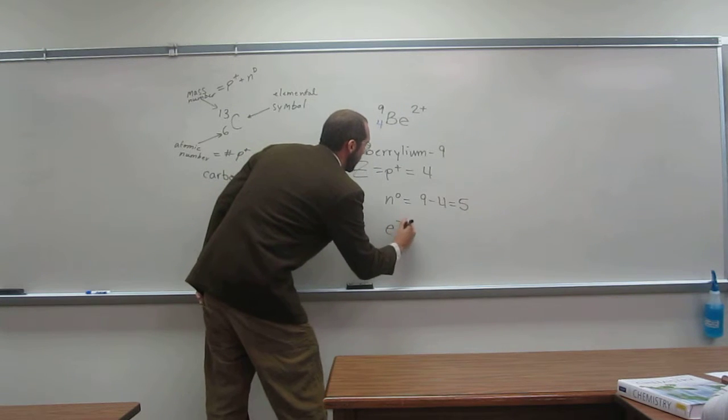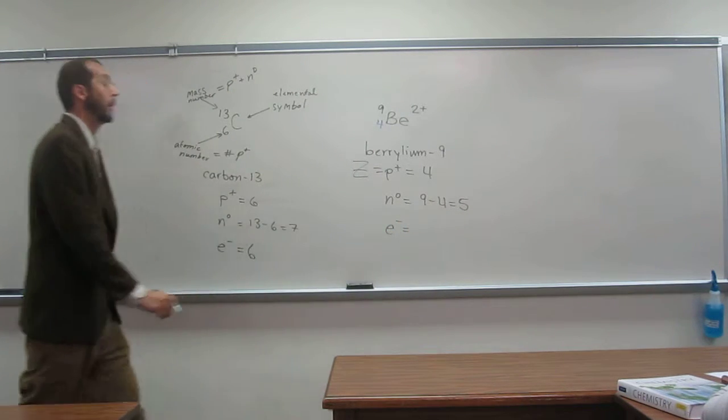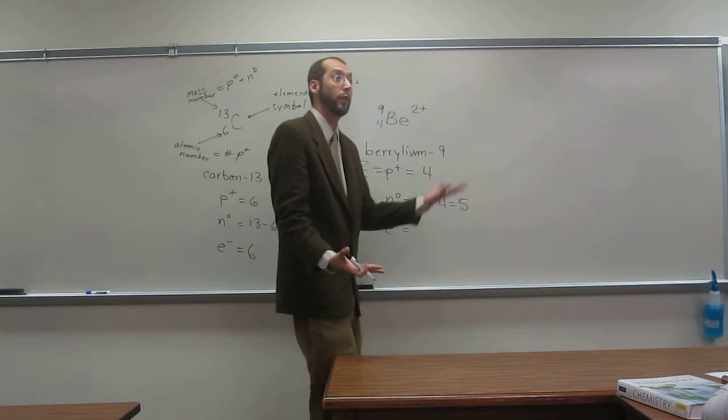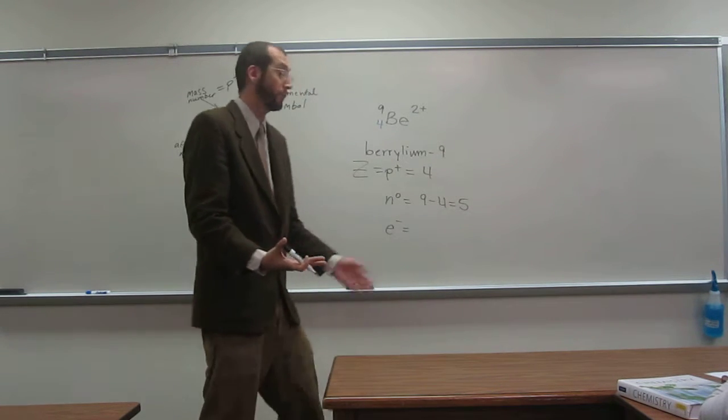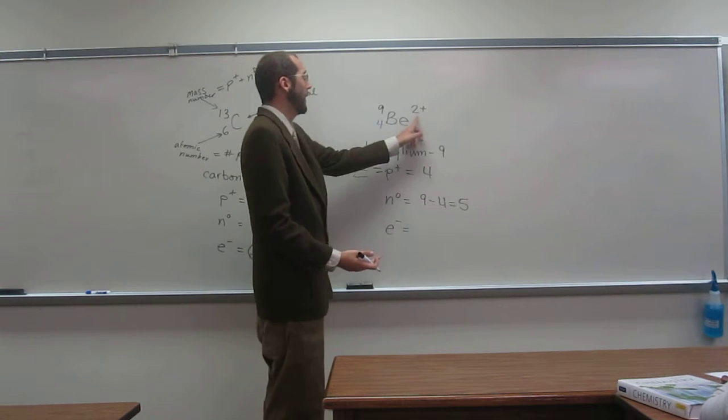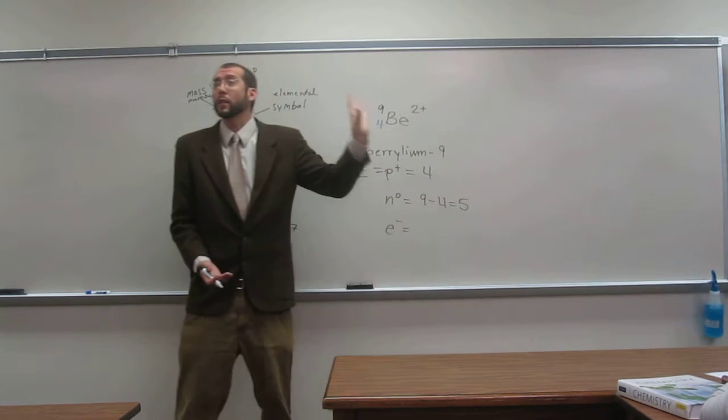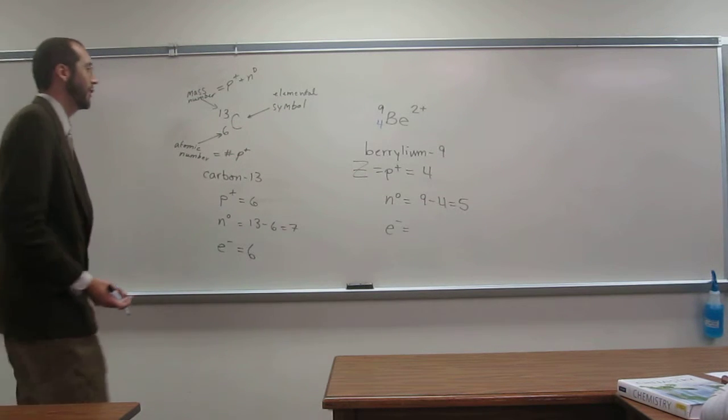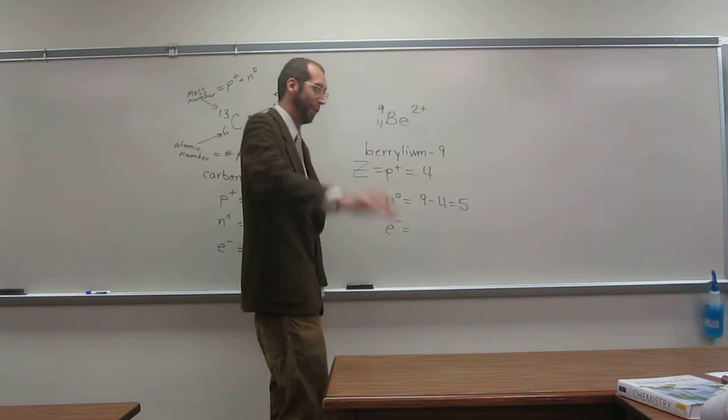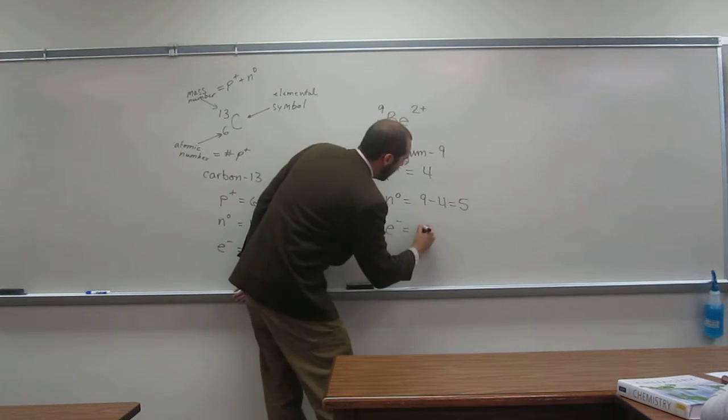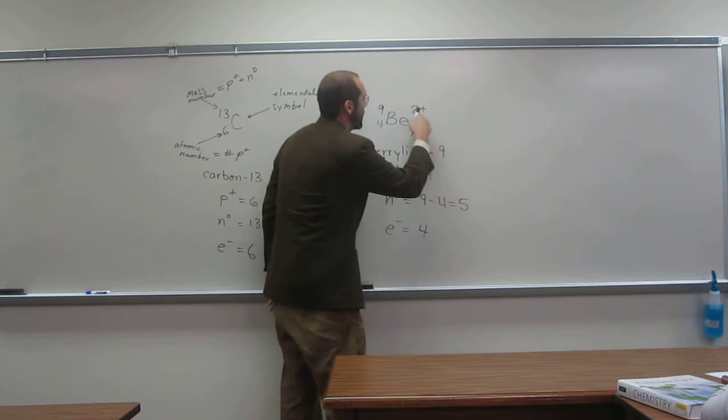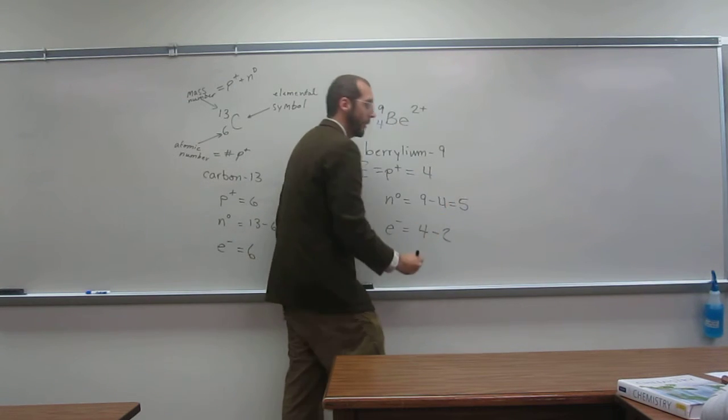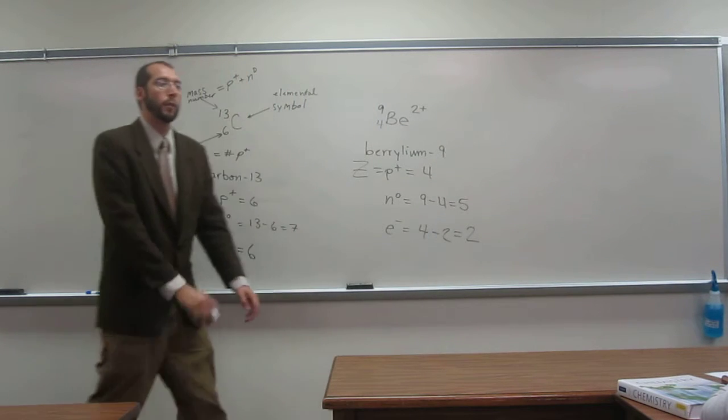The number of electrons - that's a weird one, because normally the number of electrons and protons are equivalent. But in this case, this has a positive two charge, so it's missing two electrons. Obviously you guys aren't okay with that, since you told me two before. So it should have four electrons, but since that's a plus two charge, plus two means minus two electrons, so the number of electrons is two.